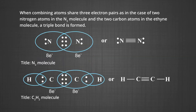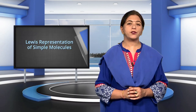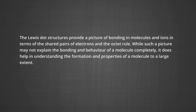When combining atoms share three electron pairs, as in the case of two nitrogen atoms in the N2 molecule and two carbon atoms in the ethyne molecule, a triple bond is formed. Lewis dot structures provide a picture of bonding in molecules and ions in terms of shared pairs of electrons and the octet rule.